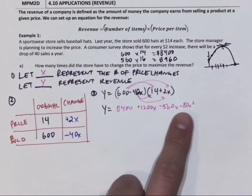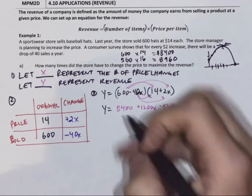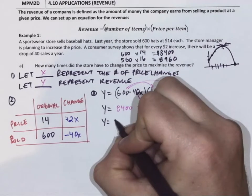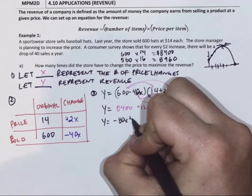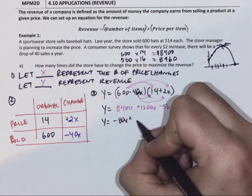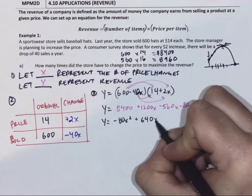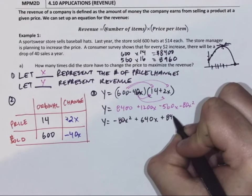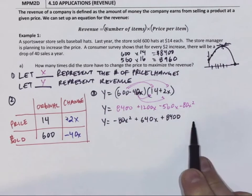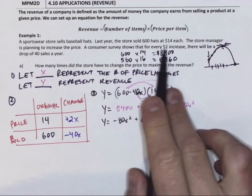I'm going to collect the like terms. I'm also going to put my X squared term first. Twelve hundred take away five sixty. So I've got it in standard form. That's my y-intercept. That makes sense. That was my starting combination.